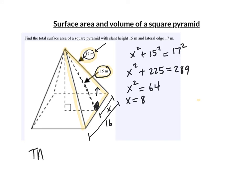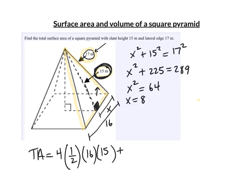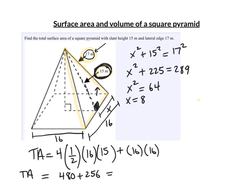Now we have everything needed for the total surface area. There are four triangles, each one-half times its base (16) times its height (the slant height, 15), plus the area of the square base (16 × 16). Calculating: the four triangles give 480, and the base gives 256, so the total surface area is 736 meters squared.